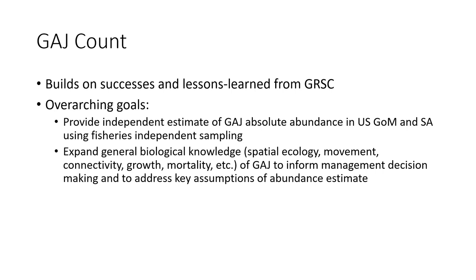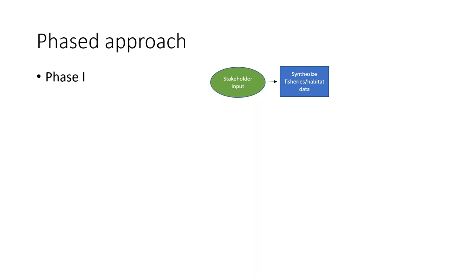Thanks Sean. The Greater Amberjack Count specifically builds on the successes and lessons learned from the Great Red Snapper Count. The main goals are: first, to provide an independent estimate of greater amberjack absolute abundance in the U.S. Gulf of Mexico and South Atlantic using fisheries-independent sampling. The secondary set of goals — equally important — are to expand general biological knowledge about the species: spatial ecology, movement, connectivity, growth, mortality. These are critical data points for any stock assessment or fisheries management effort.